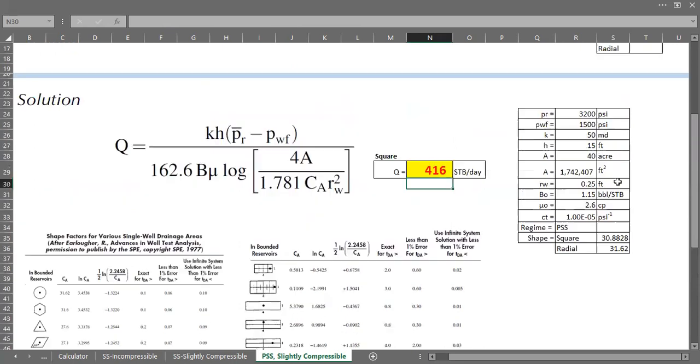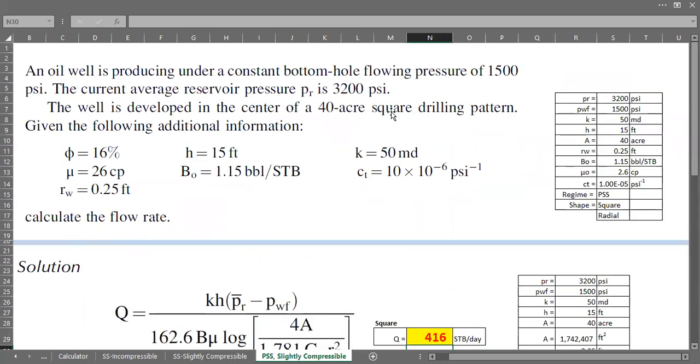All right, so the flow rate is 416 stock tank barrel per day, all right, assuming a square shape drainage area or here square drilling pattern.